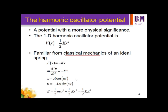If you differentiate x to get the velocity of oscillation, it equals negative Aω sin(ωt), giving v by dx/dt. The total energy is a combination of kinetic energy and potential energy. Kinetic energy is half mv², while potential energy is half kx². This equals the maximum potential energy, half kA², where A is the amplitude of oscillation.